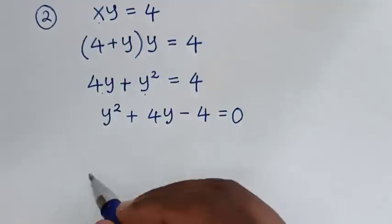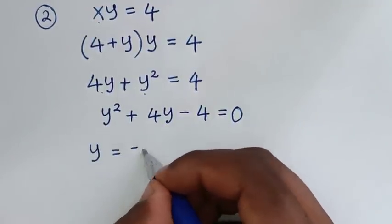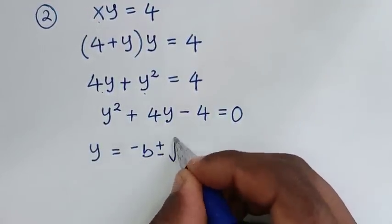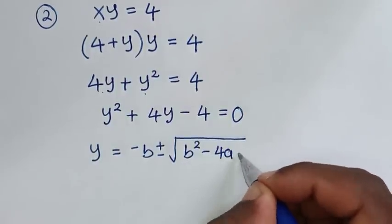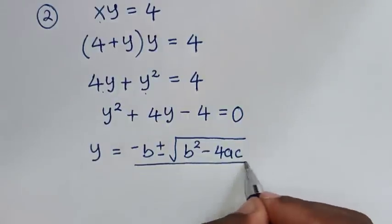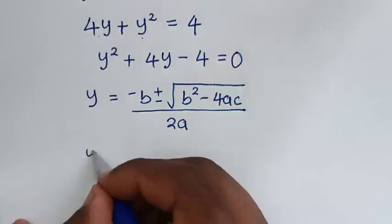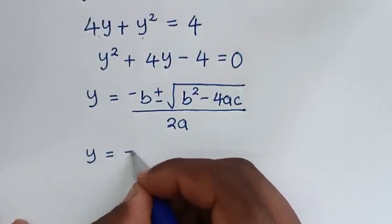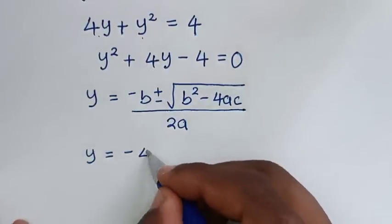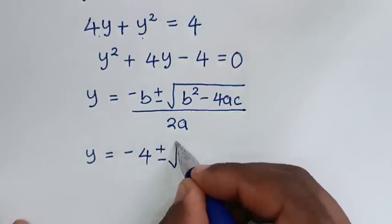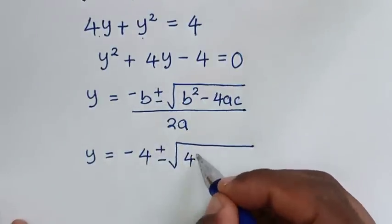To find the values of y, we use y is equal to negative b plus or minus square root of b squared minus 4ac, all over 2a. Here b is equal to 4, so it will be negative 4 plus or minus square root of 4 squared.